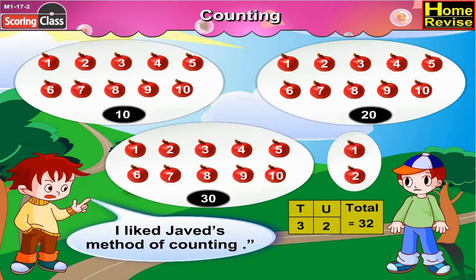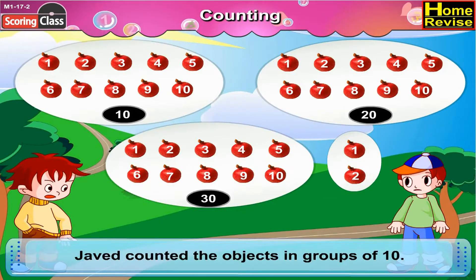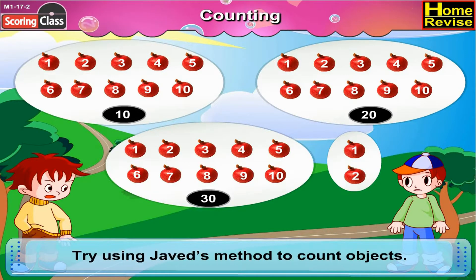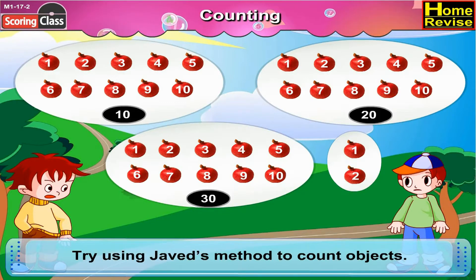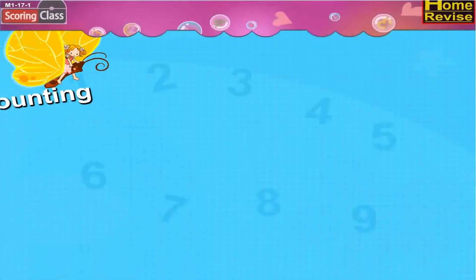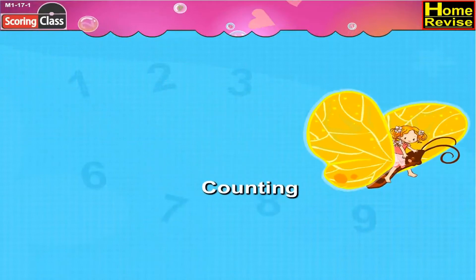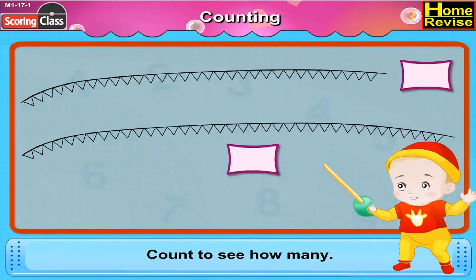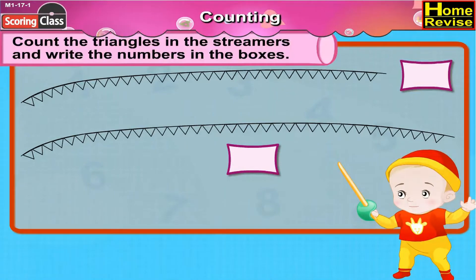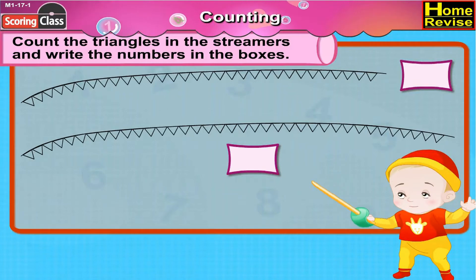Aman said, I like Javed's method of counting. Javed counted the objects in groups of 10. Then, try using Javed's method to count objects. Counting — count to see how many. Count the triangles into streamers and write the numbers in the boxes. Let's do it!